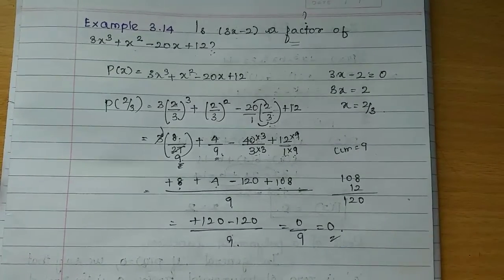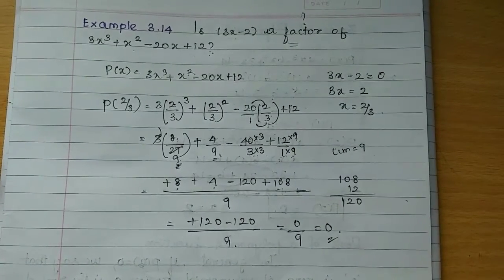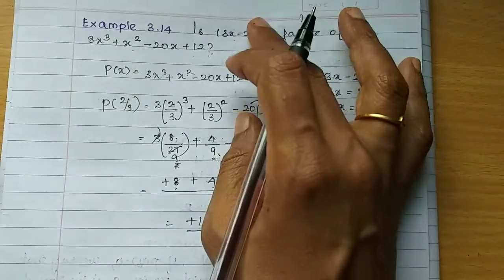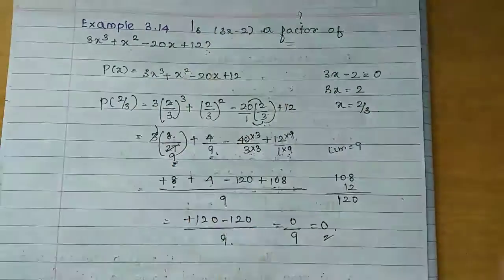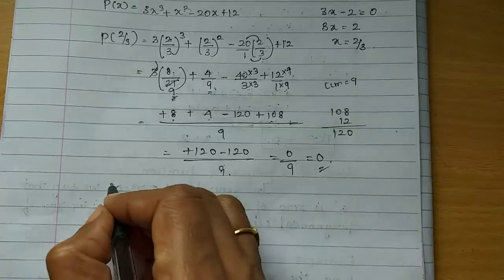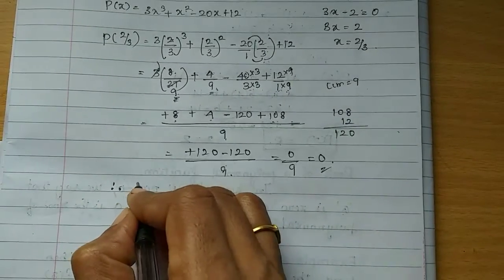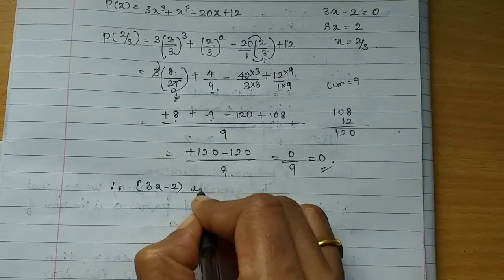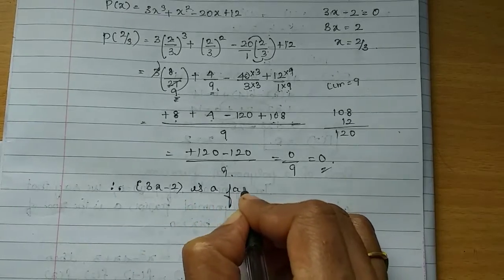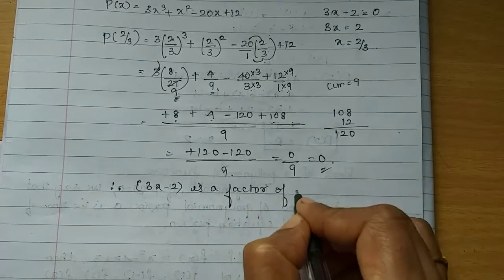Now we have to confirm that 3x minus 2 is a factor of P of x. Therefore, 3x minus 2 is a factor of P of x.